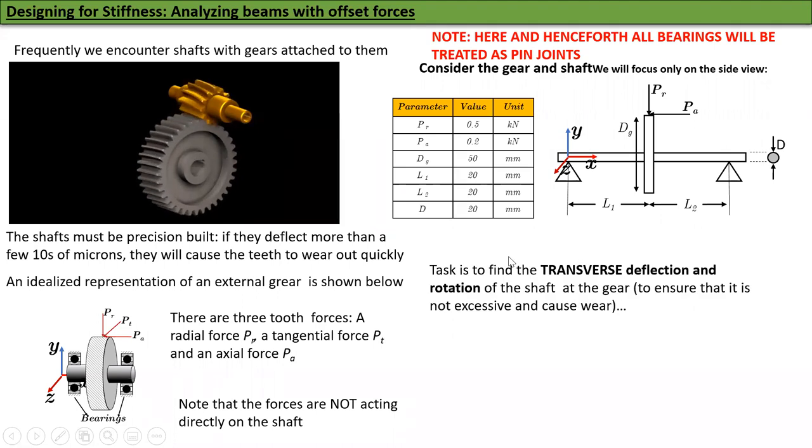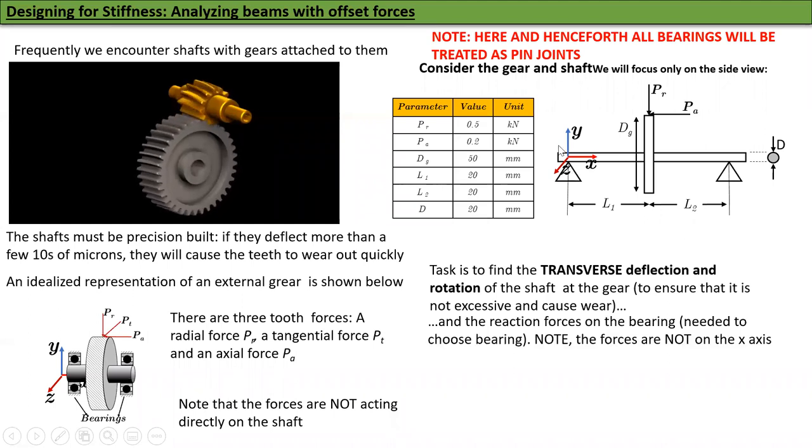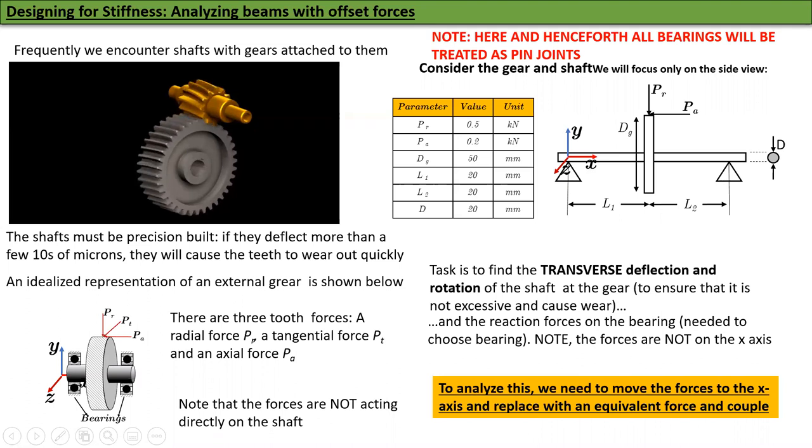Our task is to find the transverse deflection and rotation, the Z rotation, the slope of the shaft at the gear. So I want to show how much the shaft will sag and how much its slope will change to ensure that it's not excessive and cause wear. We also need to find the reaction forces at the bearings because that's what is used to pick the bearings. The main thing is the forces are not on the x-axis.